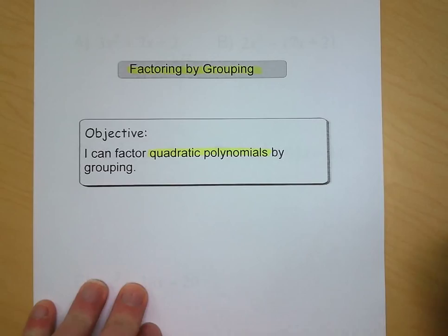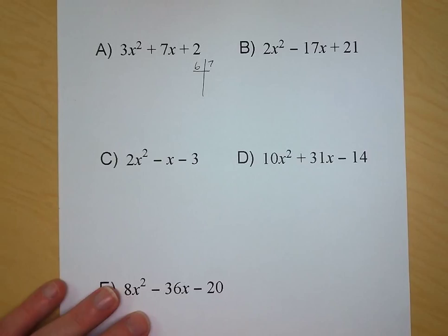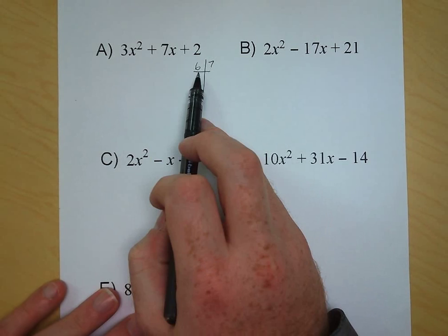For letter A, we're going to take the starting approach that we used before. We're looking for factors of 6 — we multiplied our 3 and 2 — so we're looking for factors of 6 that are going to add up to 7. Those two factors are going to be 1 and 6.